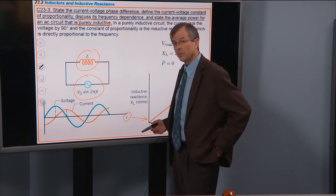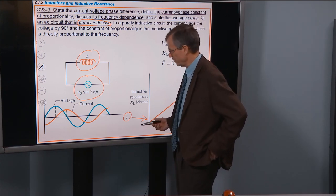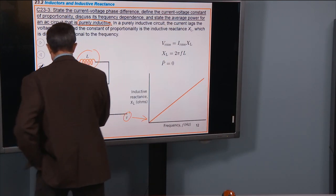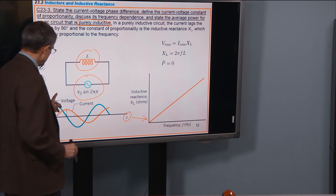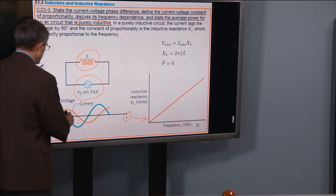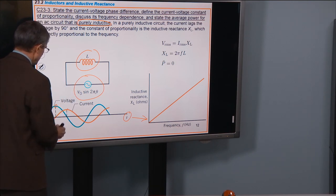So I want to ask which one gets to its peak first. I'm going to go opposite, backwards in time, until I find the one that reaches its peak first. And it's the voltage, and then the current reaches its peak later.